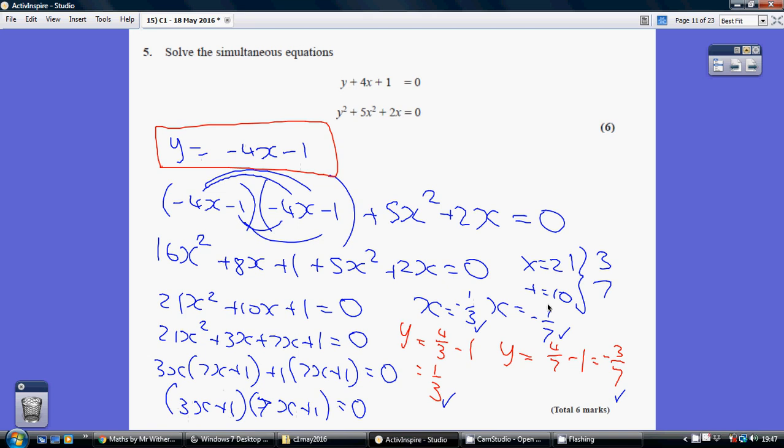And when x is minus 1/7, substituting that into here, I get y being minus 3/7. So my two solutions are minus 1/3, 1/3, and minus 1/7, minus 3/7.